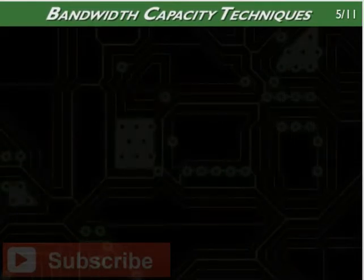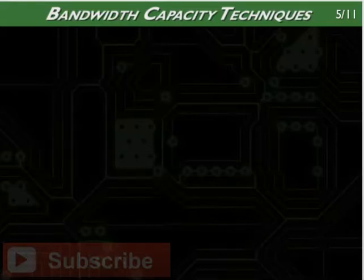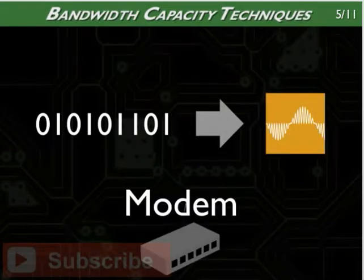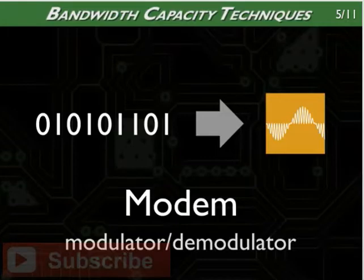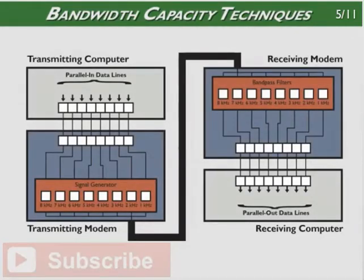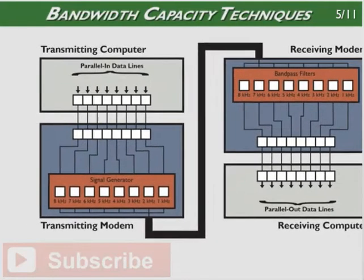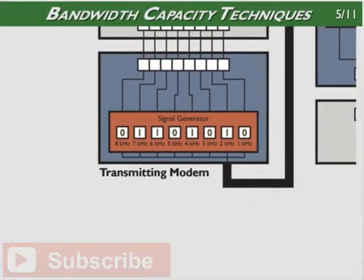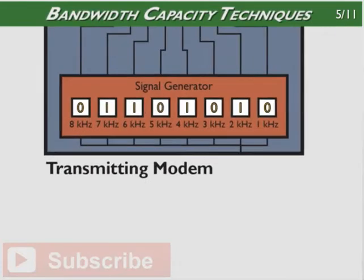A number of techniques have been used to increase the speed of data flow over one conductor. One effective method is to convert binary data bits into an analog signal using a modem. Modem is short for modulator-demodulator. A modem simultaneously transmits multiple bits over a single cable using a combination of amplitude modulation and different frequencies. As a byte is parallel transferred into the modem, each bit activates an analog signal generator, which produces a sine wave at a given frequency. Each signal generator creates a sine wave at a different frequency.